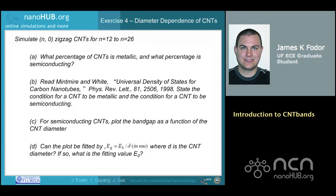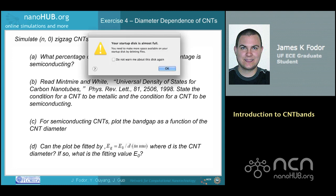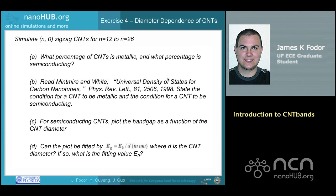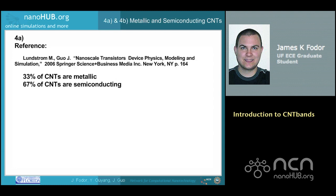This is the solution to exercise 4. Simulate N-0 zigzag CNTs from N equal to 12 to N equal to 26. A: What percentage of CNTs is metallic and what percentage is semiconducting? B: Read Mintmyer and White, Universal Density of States for Carbon Nanotubes, Physics Review Letters 81-2506-1998, and state the condition for a CNT to be metallic and the condition for a CNT to be semiconducting. For part A, referring to the cited reference states that about 33% of all CNTs are metallic, with the remaining 67% semiconducting.